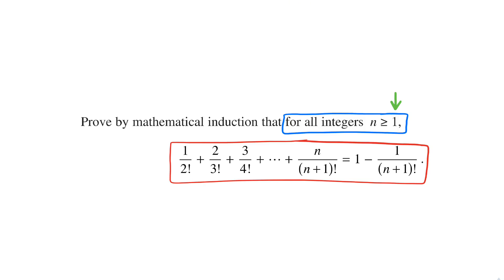First, we need to test that the statement's true for its first given value. From the question, we can see that's n equals 1. We want to show that substituting n equals 1 into the equation satisfies it and makes a true statement. Remember to pay careful attention to this first value, which is sometimes called the base case. It's usually n equals 1.